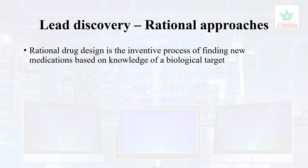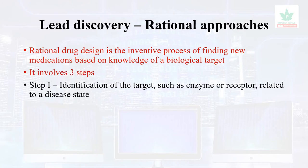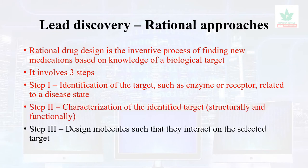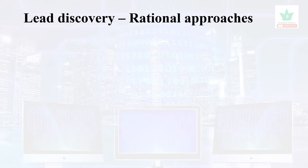The rational approaches to lead discovery involve finding a particular target — it is a new, inventive method for finding new medications. It involves three steps: step one is identification of a target such as an enzyme or receptor related to a particular disease state; step two is characterization of the identified target, structurally and functionally; step three is designing molecules that interact with the selected target.